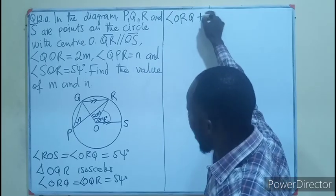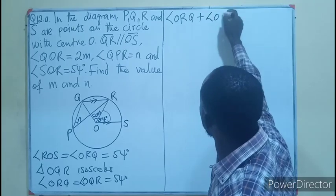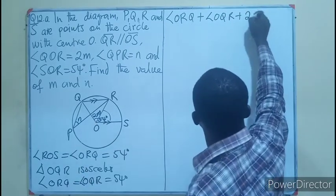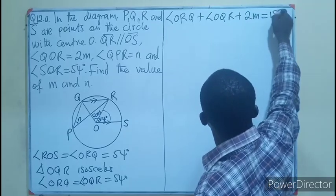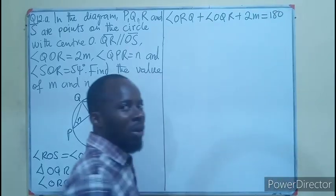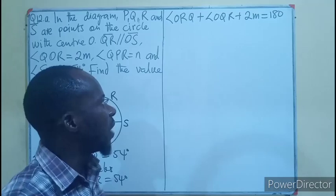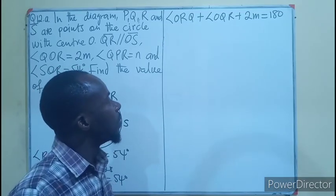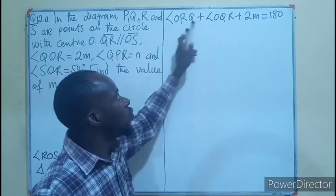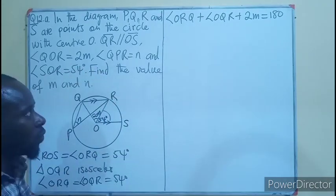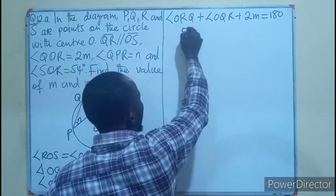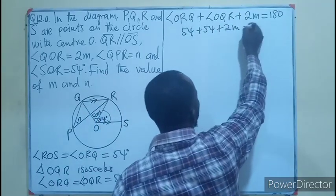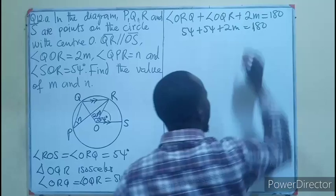Angle ORQ plus angle OQR plus the given angle 2m equals 180 degrees. This is because the sum of interior angles of a triangle equals 180. Since I know these two angles are 54, I have 54 + 54 + 2m = 180.